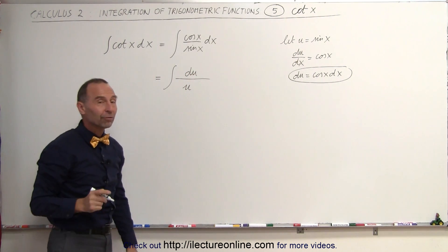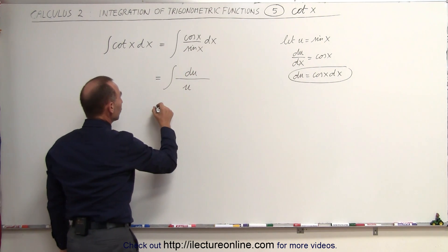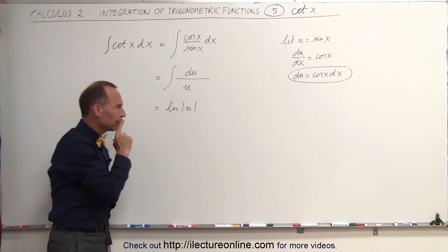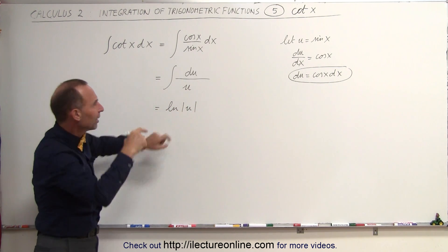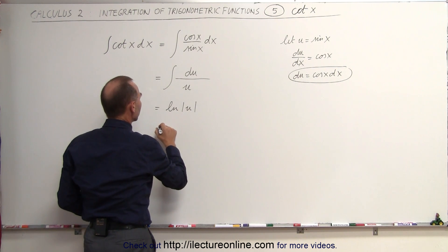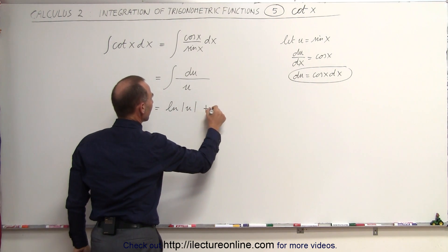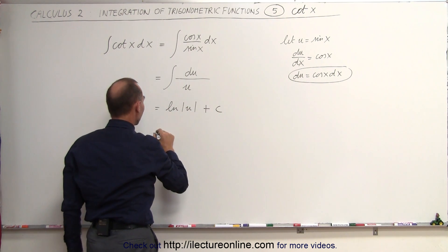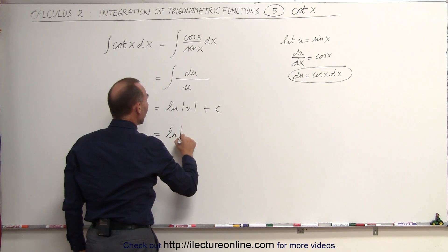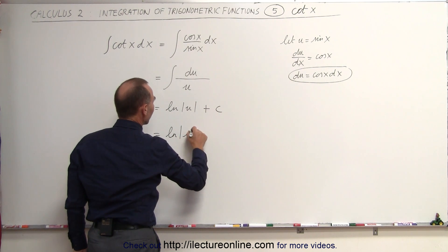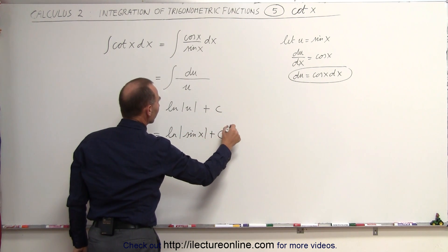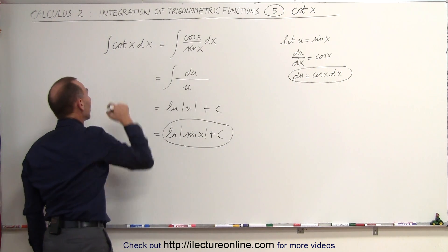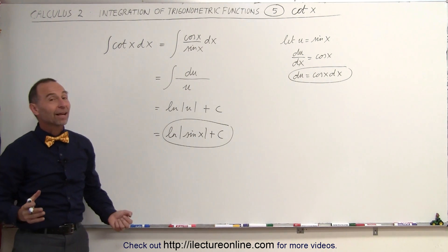We know that the integral of du over u is equal to the natural log of u. Since u is equal to the sine of x, and since u can be replaced by sine of x, this is equal to the natural log of the sine of x plus a constant of integration. That is the integral of the cotangent of x, and that's how we do that.